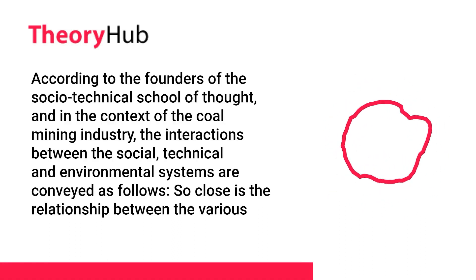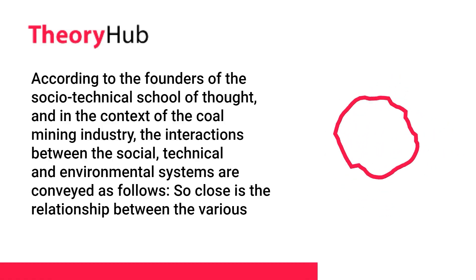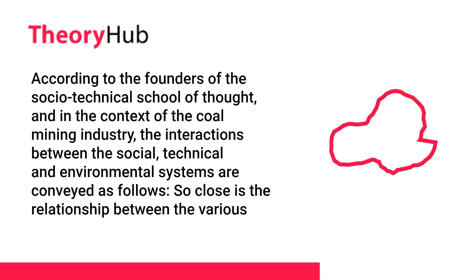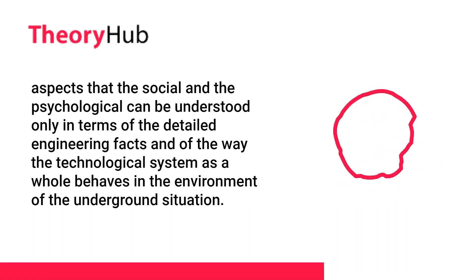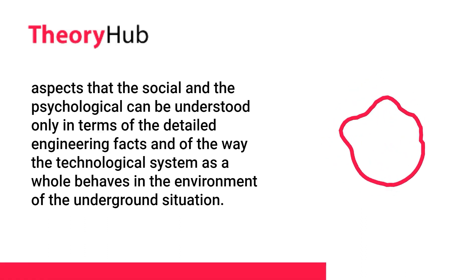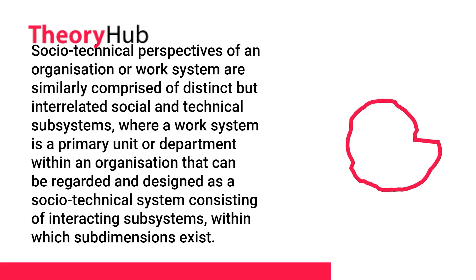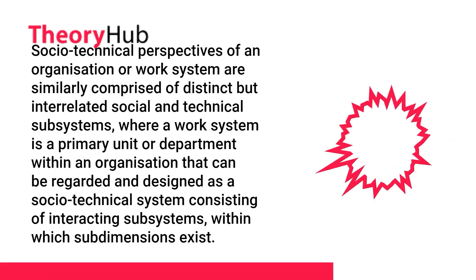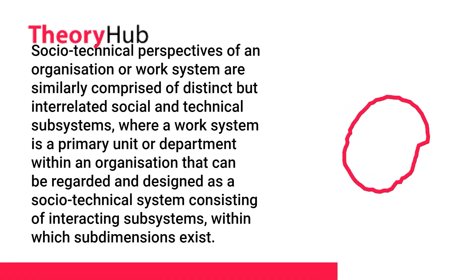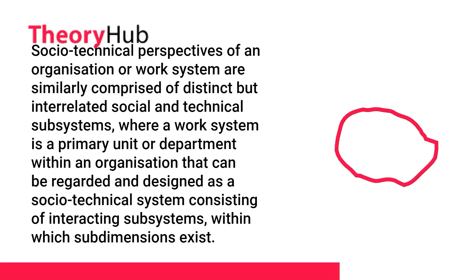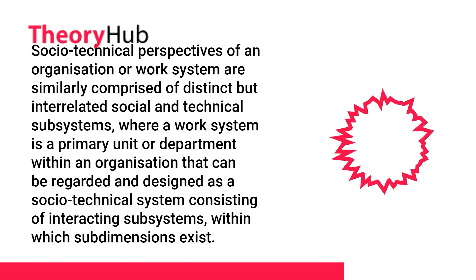According to the founders of the socio-technical school of thought, and in the context of the coal mining industry, the interactions between the social, technical, and environmental systems are conveyed as follows: so close is the relationship between the various aspects that the social and psychological can be understood only in terms of the detailed engineering facts and of the way the technological system as a whole behaves in the environment of the underground situation. Socio-technical perspectives of an organization are similarly comprised of distinct but interrelated social and technical subsystems, where a work system is a primary unit that can be regarded and designed as a socio-technical system consisting of interacting subsystems, within which sub-dimensions exist.